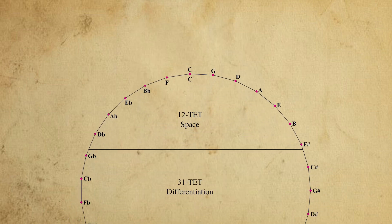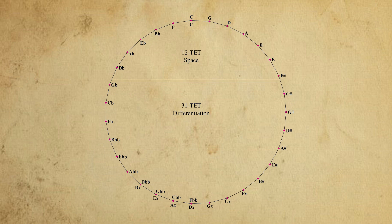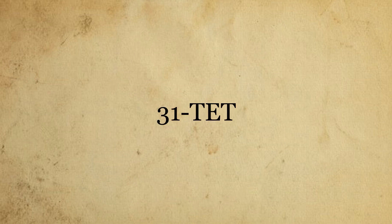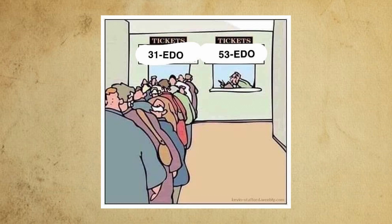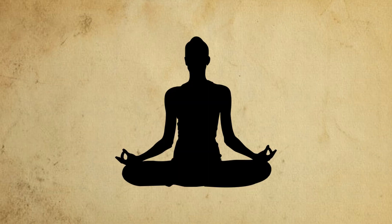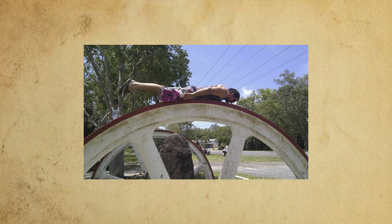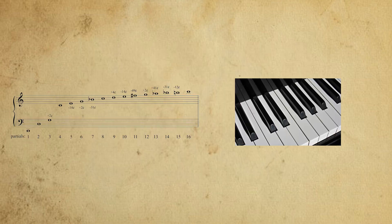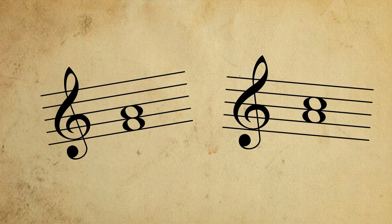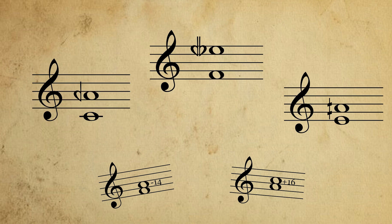31TET completes this circle by filling in the missing pitches. 31TET is our current favorite. Cramming more and more notes into the octave will always impact memorability and especially physical playability, but we feel like 31 strikes a nice balance. This tuning system is a beautiful compromise between the overtone series and chromaticism. We get to keep all our beloved intervals from 12TET, just with better intonation, and even some new ones on top. And although there are more pitches to define, we can use common accidentals to describe them all.